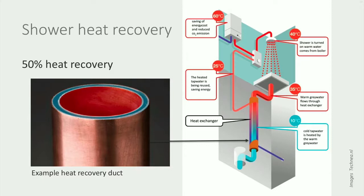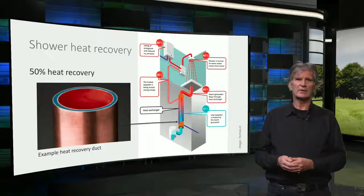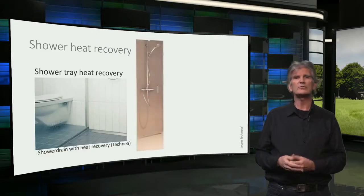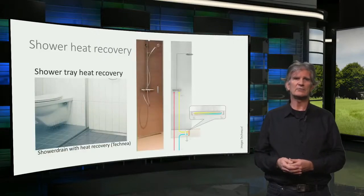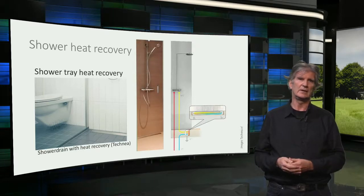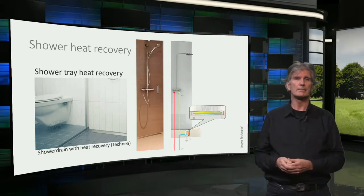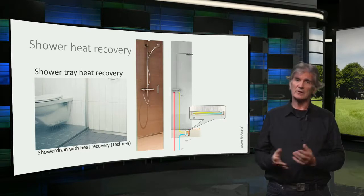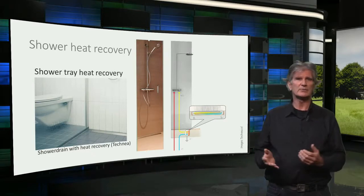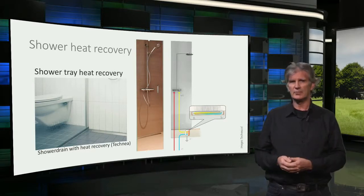This shower heat recovery can be easily installed if the shower is on the first floor. There are also systems where the heat recovery is embedded in the shower tray, as you can see here. The heat recovery only works when the inlet and flushing of warm water is at the same time. With a system like this, you can't regain the heat from for instance a bathtub or a washing machine.